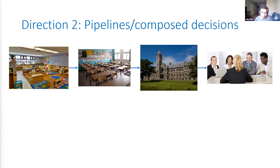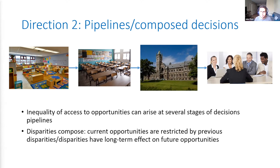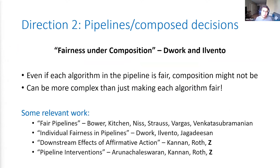Another important direction: generally when thinking about fairness, you're not going to be making a single decision about an individual. Often you'll have many decisions that compose with each other over time, and you can have decision pipelines in which unfairness arises at several stages — and those disparities can compound. The 'Fairness in Compositional' work by Dwork and Ilvento showed that these are pretty complicated things to analyze. Even if each algorithm in the pipeline is fair, the composition of all these algorithms — the whole pipeline — doesn't have to be fair.